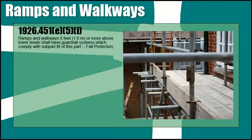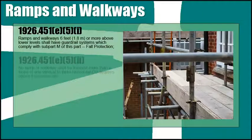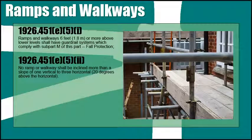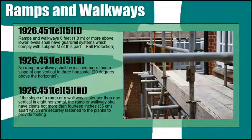Ramps and walkways six feet or more above lower levels shall have guardrail systems which comply with 1926 Subpart M fall protection. No ramp or walkway shall be inclined more than a slope of one vertical to three horizontal degrees — 20 degrees above horizontal. If the slope is steeper than one vertical to eight horizontal degrees, the ramp or walkway shall have cleats not more than 14 inches apart, securely fastened to the planks to provide footing.